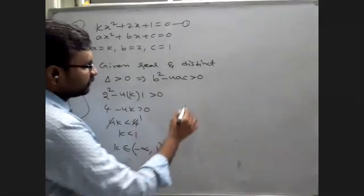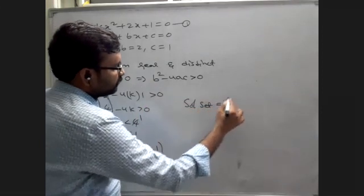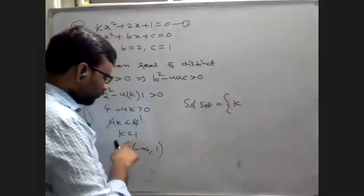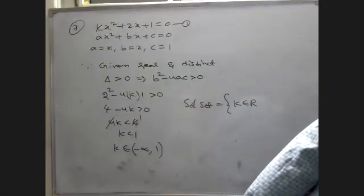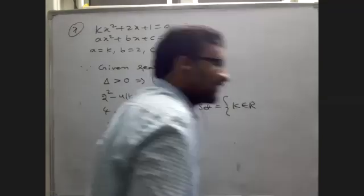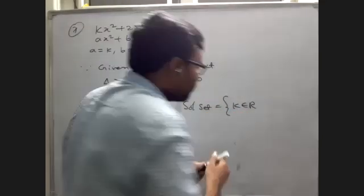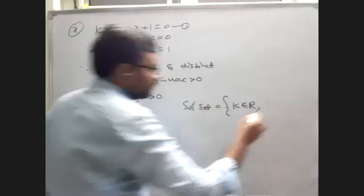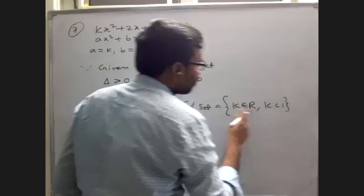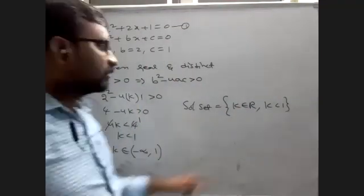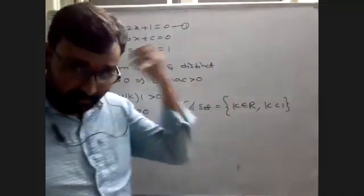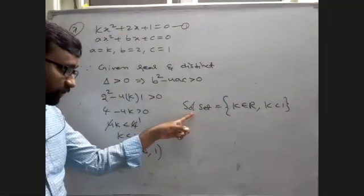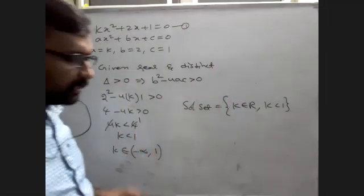The solution set is: K belongs to real numbers such that K < 1, written as (-∞, 1). Don't write flower bracket here — use normal brackets. Near 1, use only open bracket because there is no equal to symbol.